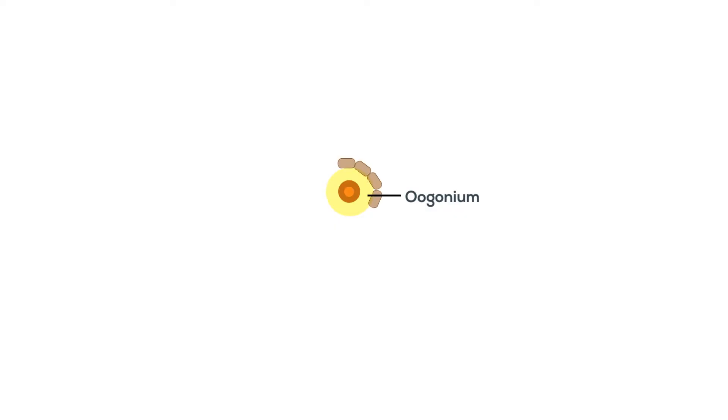The oogonium gets covered by a single layer of flat epithelial cells, the follicular cells, to form primordial follicle. The flattened follicular cells become columnar and form unilaminar primary follicle.